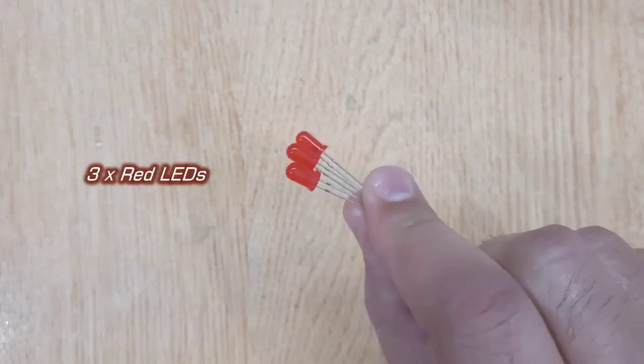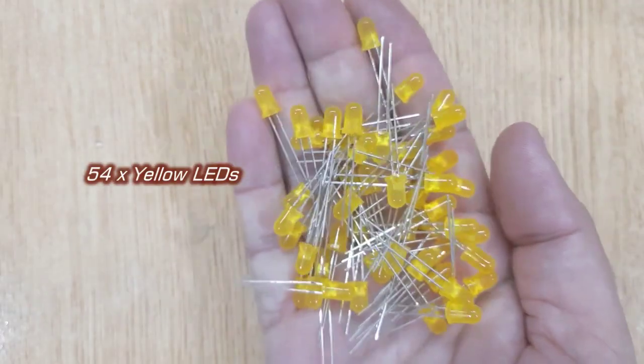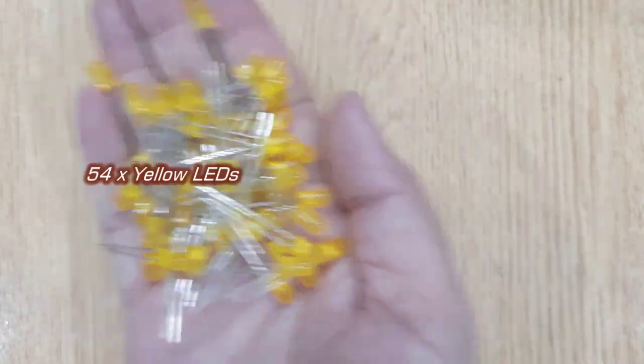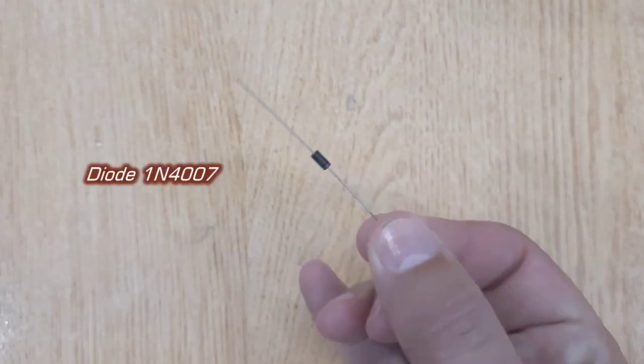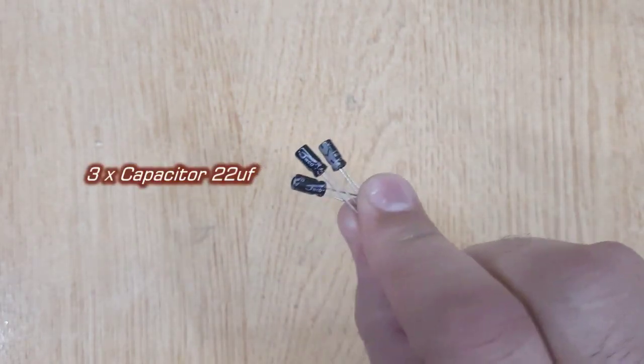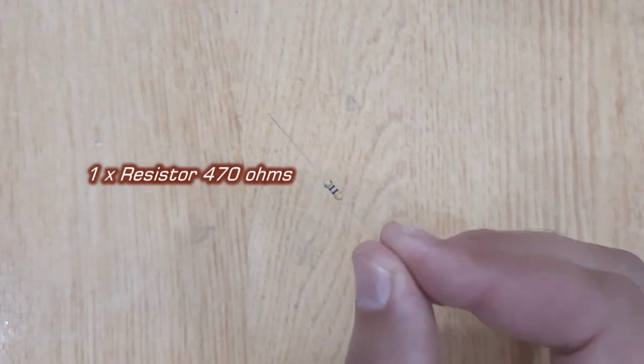Red LED 3 pieces, Yellow LEDs 54 pieces, Diode 1N4007, Capacitors 22UF 3 pieces, Resistor 470 Ohms.